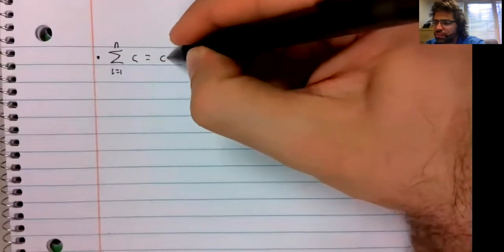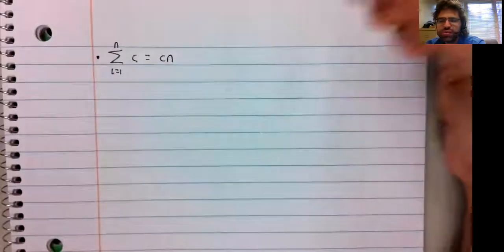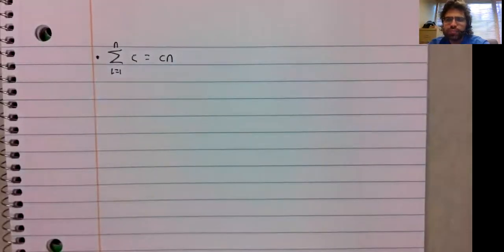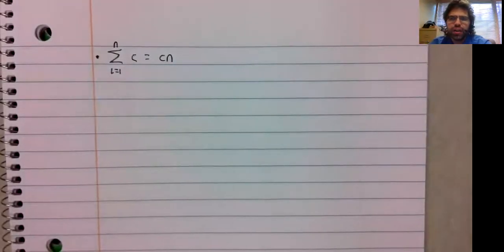The sum from i equals one to n of a constant c is c times n. And I mean, this is how you first define multiplication, as repeated addition of the same number.